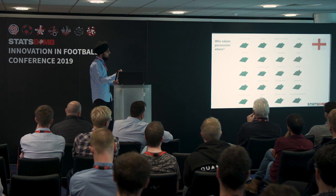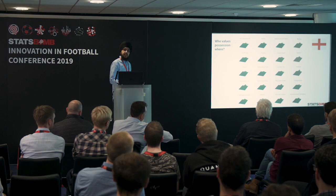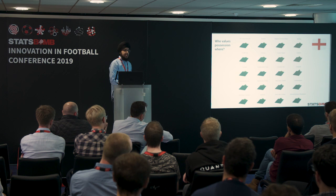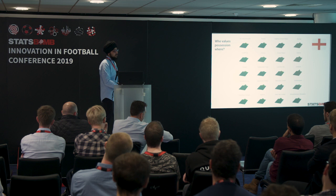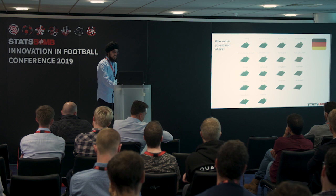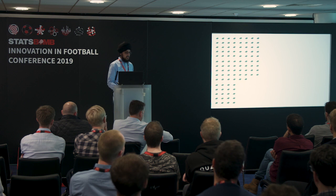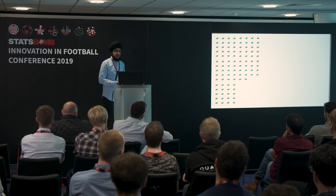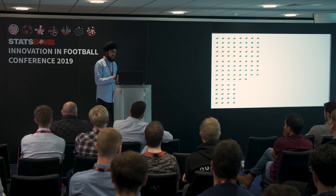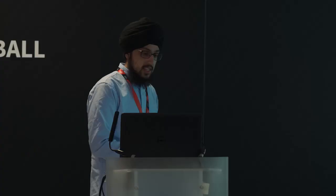You can look at all these different teams — they largely have the same shape, naturally everyone values possession closer to the goal, but there are subtle differences. Some teams are more dangerous on the wing, some through the middle, some are just more clinical. Liverpool, for example, has a very high peak because they're inherently very dangerous even in front of goal. We can use these XT maps to understand something deeper about team style — in a way, these maps encapsulate what parts of the pitch a particular team values more than others.